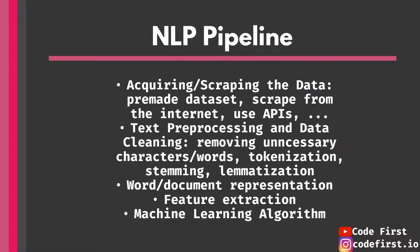The first step, common to pretty much any pipeline, is acquiring or scraping the data. Before you can do the NLP task, you need data — either for training or for an unsupervised learning task. Where do you get this data? You can get it from a pre-made dataset, from a company's data team that collects reviews or user data, by scraping from the internet and HTML tags, from databases, APIs, or for example the Twitter API to get different tweets.